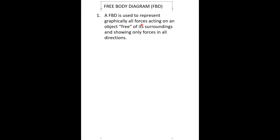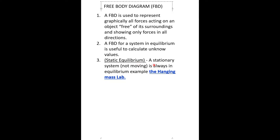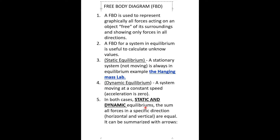Free body diagram, or FBD. A free body diagram is used to represent graphically all forces acting on an object free of its surroundings, showing only forces in all directions. A FBD for a system in equilibrium is useful to calculate unknown values. Static equilibrium is a stationary system not moving, which is always in equilibrium. Dynamic equilibrium is a system moving at constant speed when acceleration is zero. In both cases, the sum of all forces in a specific direction — horizontal and vertical — are equal.